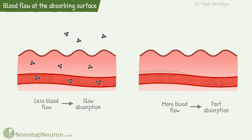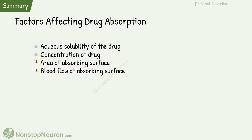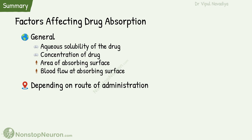So these were all the factors. Please note that these are the general factors that apply to all routes. Apart from them, there can also be other factors depending on the route of administration, which we will cover in a separate video. As a quick recap: the drug is absorbed faster when it gets dissolved faster, is given as a concentrated solution, the area of the absorbing surface is larger, and blood flow at the absorbing surface is high.